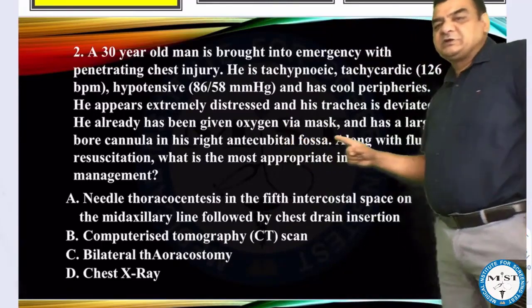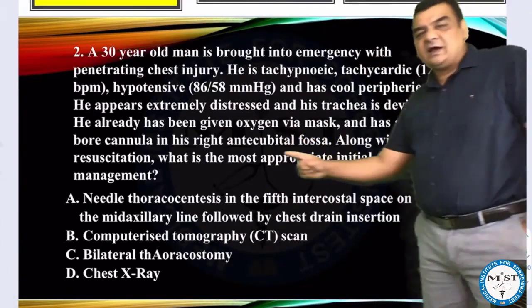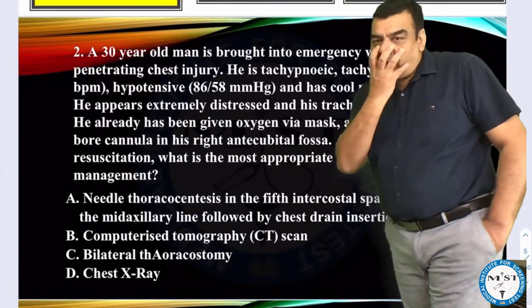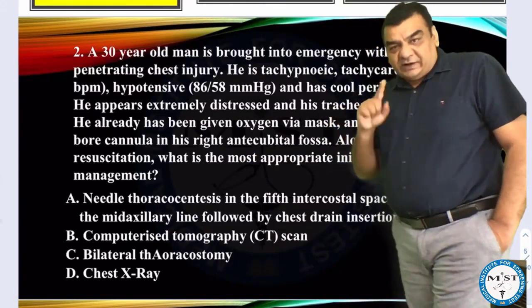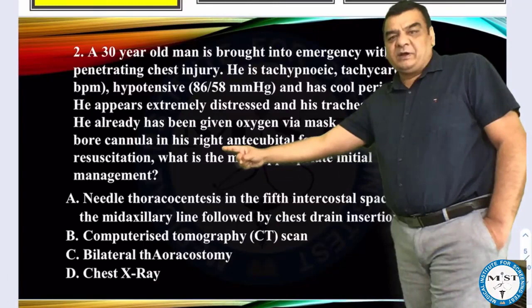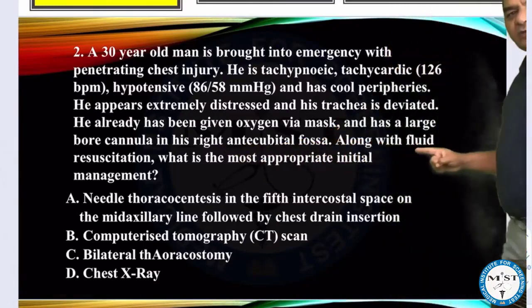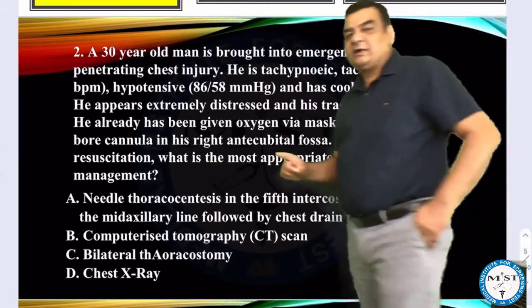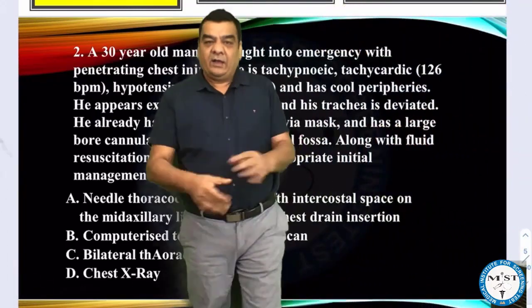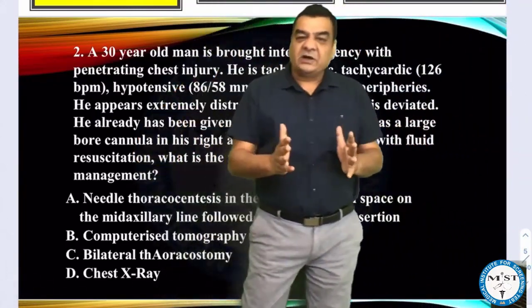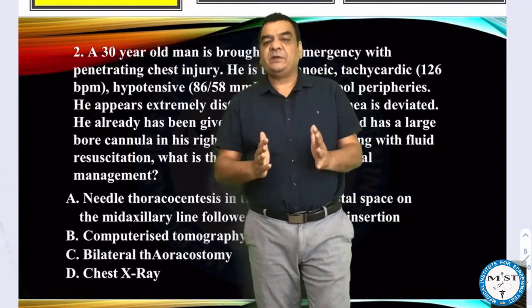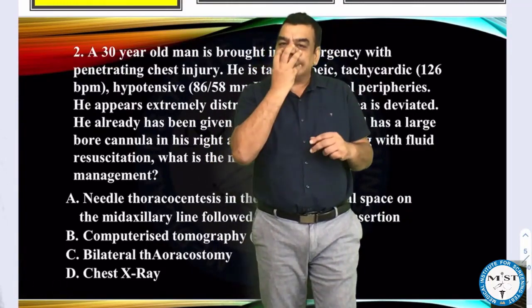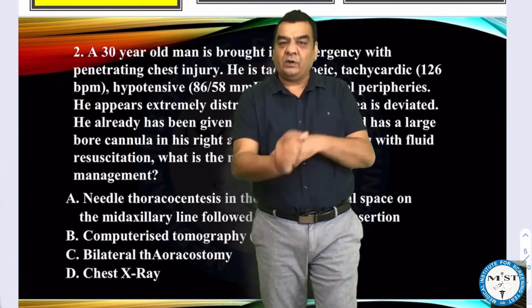He has already been given oxygen via mask and has a large-bore cannula in his right antecubital fossa, meaning airway, breathing, and circulation are being taken care of along with fluid resuscitation. The question asks for the most appropriate initial management — the patient is in emergency, ABC is being done, tension pneumothorax is present, oxygen and IV fluids are ongoing.